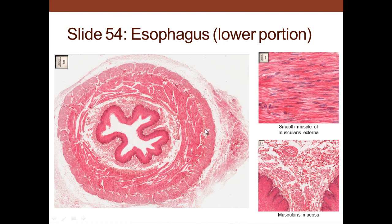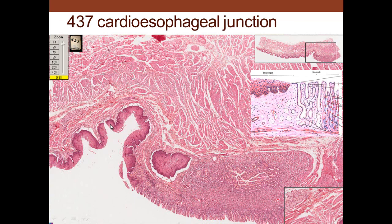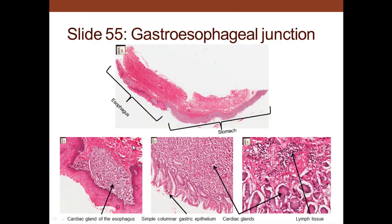We can see the epithelium and muscularis externa; as you get down toward the stomach the muscularis becomes smooth muscle. The stratified squamous epithelium abruptly transitions to simple columnar epithelium of the gastric region. You can clearly see this abrupt change from stratified squamous in the esophagus to simple columnar in the stomach, and you can see some of the cardioesophageal glands — this is the esophagus transitioning to the stomach.